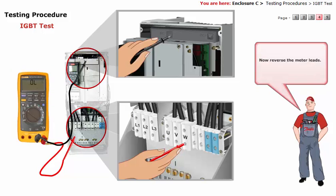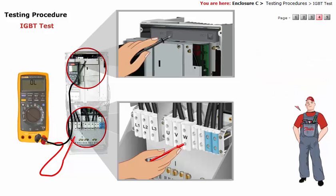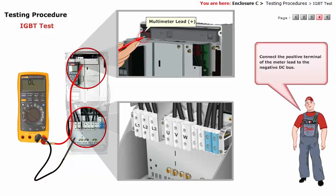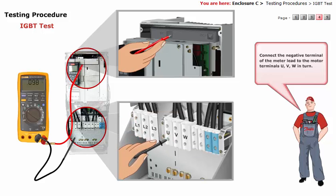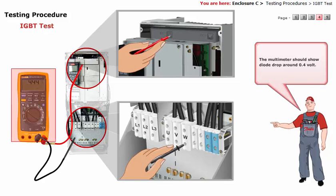Now, reverse the meter leads. That is, connect the positive terminal of the meter lead to the negative DC bus. Connect the negative terminal of the meter lead to the motor terminals U, V, W in turn. The multimeter should show a diode drop of around 0.4 volt.